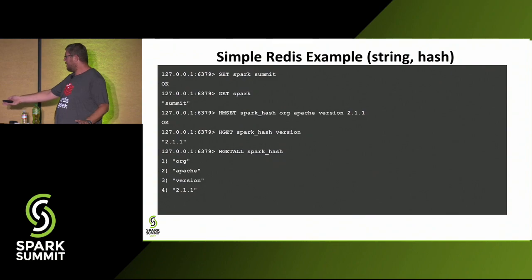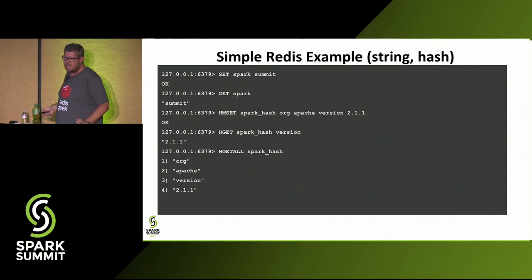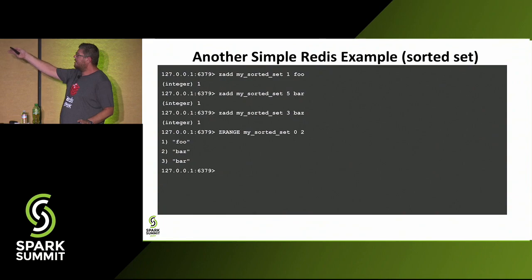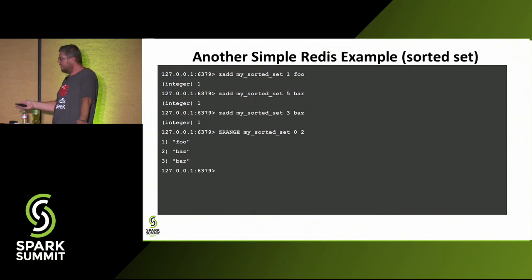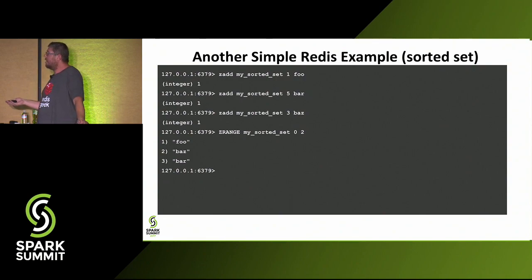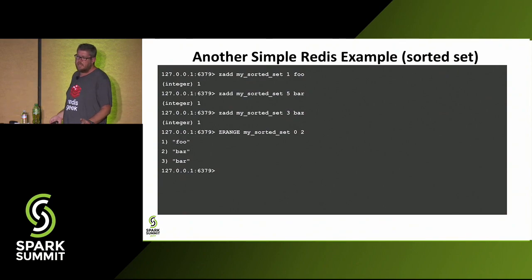If you use HGET, you can get only one key from the hash — asking for 'version' returns '2.1.1'. Using HGETALL gives you all hash members: org is Apache and version is 2.1.1. The last native Redis example is sorted set. I set three keys with different scores: 'foo' with score 1, 'bar' with score 5, and 'bus' with score 3. When you get the range of the sorted set, they come back in ascending order.